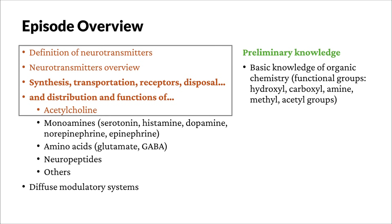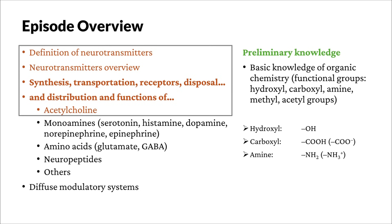This episode requires basic knowledge of organic chemistry, especially functional groups, including hydroxyl, carboxyl, amine groups, methyl groups, and acetyl groups. Here are the illustrations of some of the more important groups. A hydroxyl group is an oxygen atom plus a hydrogen atom. The carboxyl group is COOH, sometimes presented in the form of its anion COO-. The amine group is NH2, sometimes presented in its cation form NH3+. The acetyl group is CH3COO. It is also recommended that the notations used in organic chemistry are known for this episode.